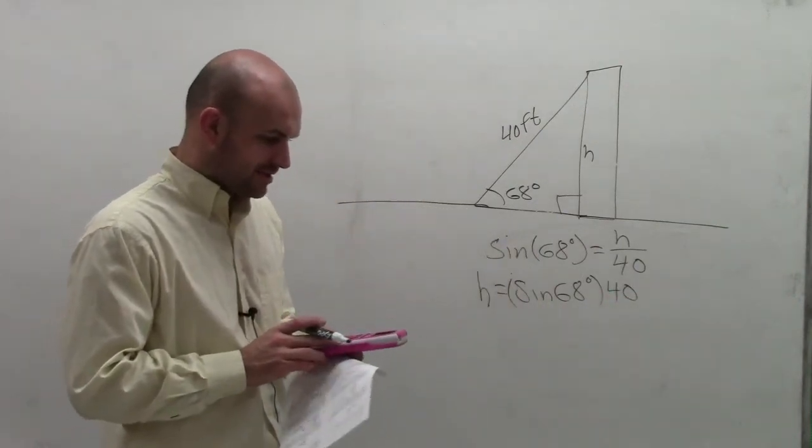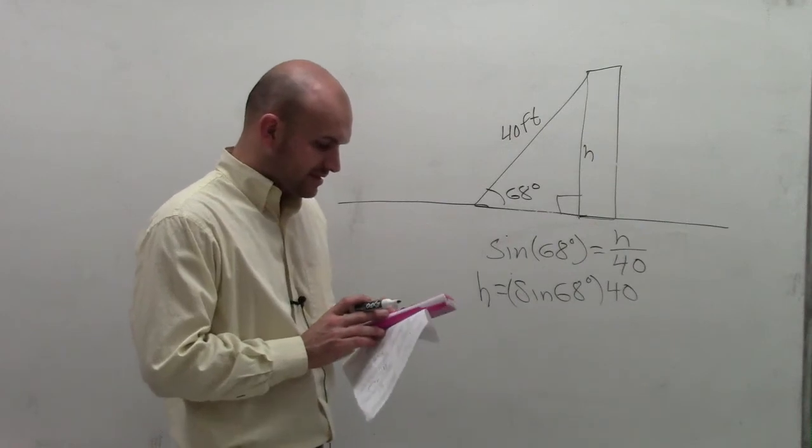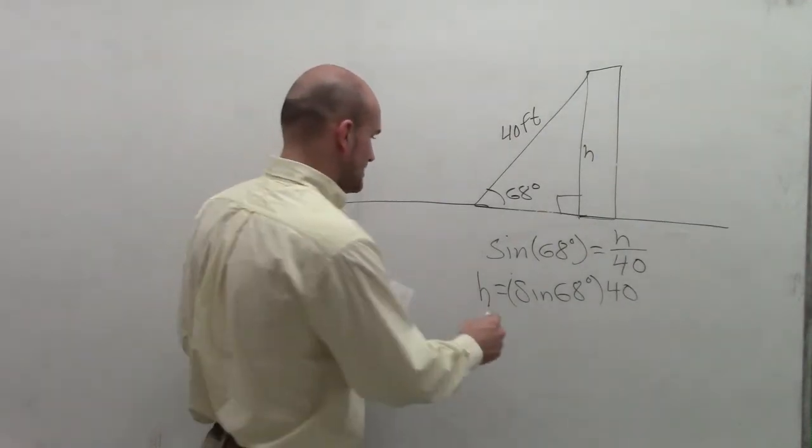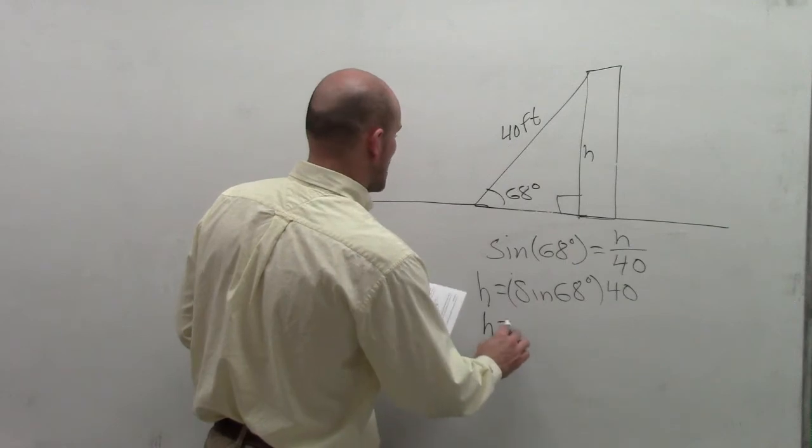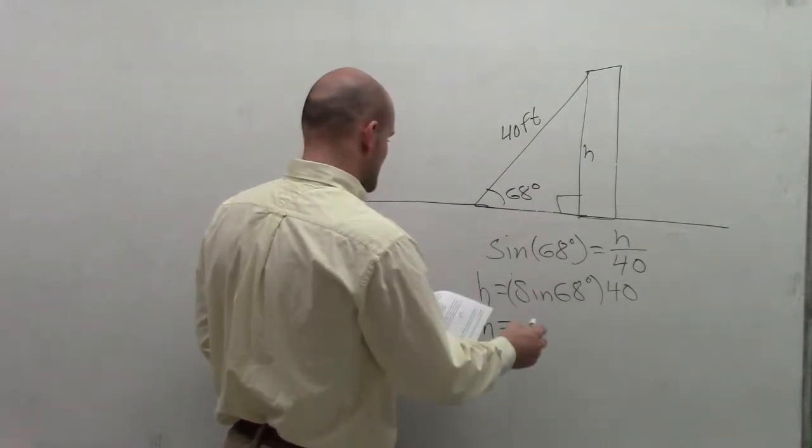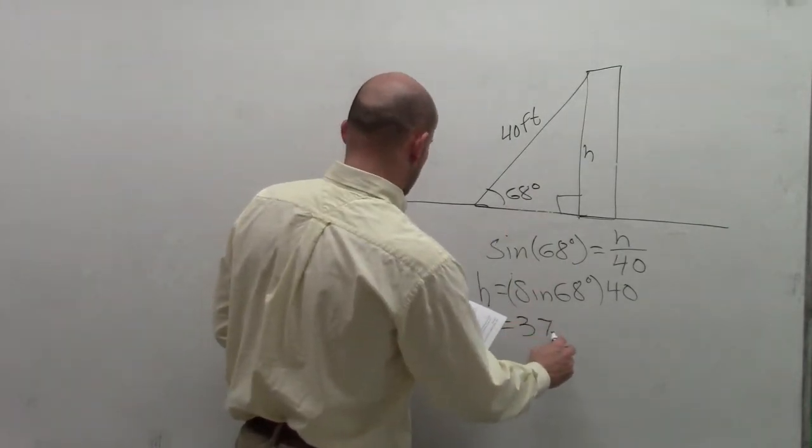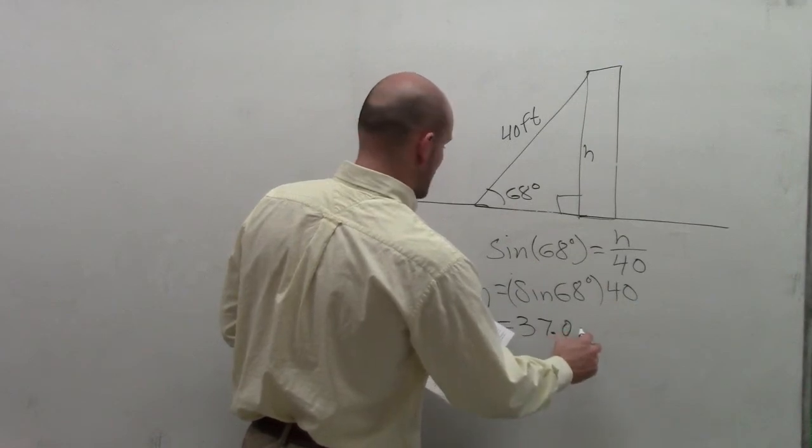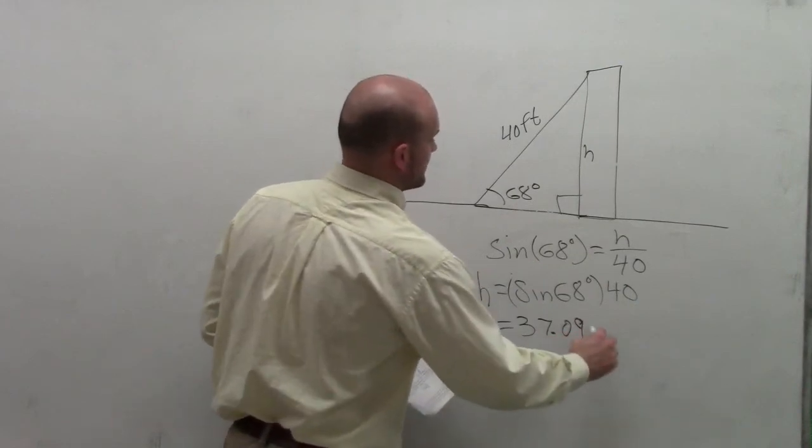So now I just type in my calculator 40 times the sine of 68, and that gives me h. That means the height of my ladder off the ground is 37.09 feet.